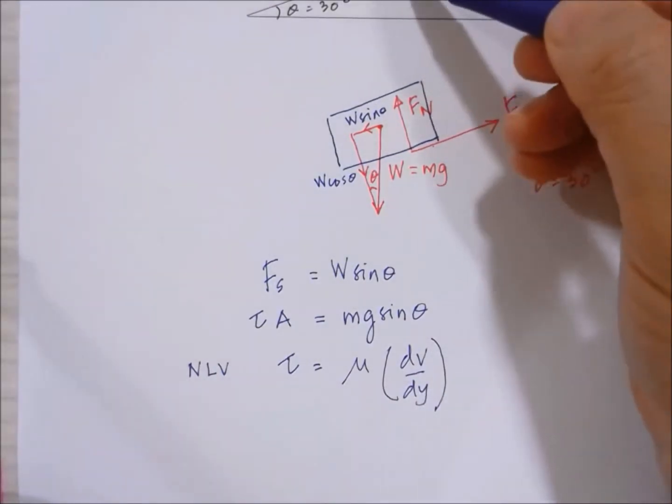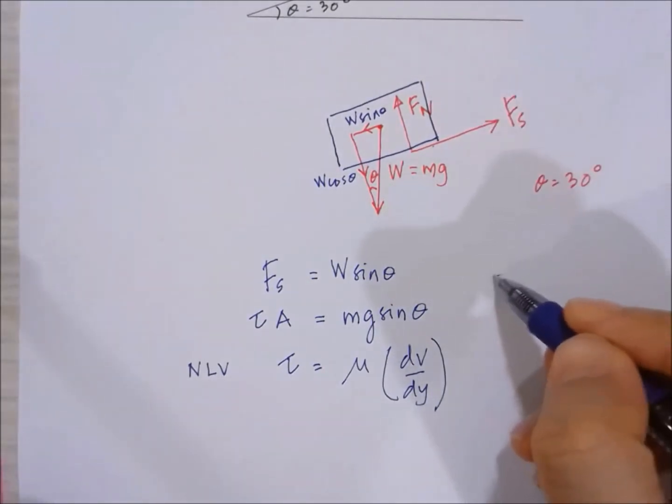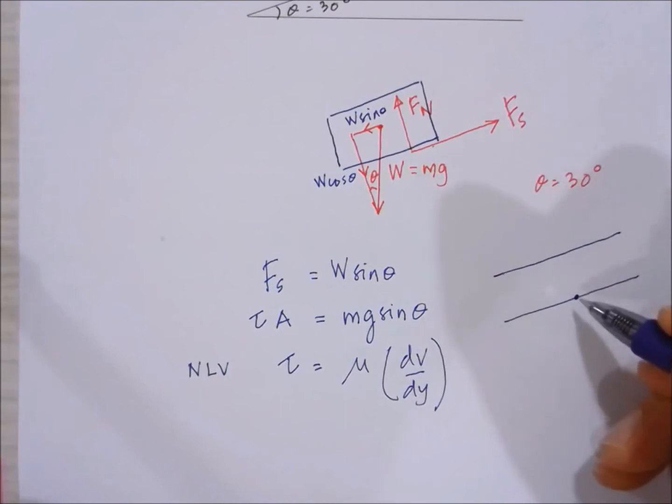If you consider the lubrication oil. So this is the block and this is the ramp. So the fluid which is in contact with the ramp will have zero velocity.